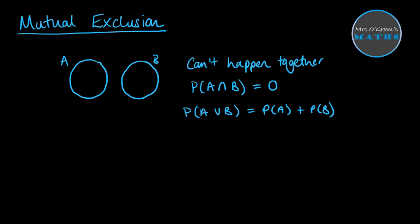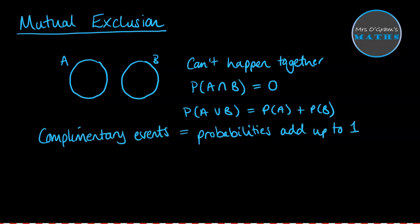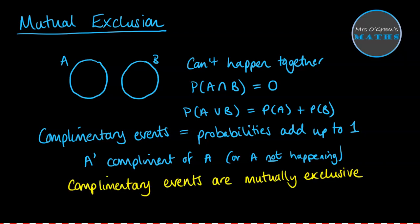We can use this to test whether something is mutually exclusive or not. A term that goes hand in hand with mutual exclusion is whether events are complementary. This happens when two events' probabilities add up to one. We think about it as A′ being the complement of A, or A not happening. Complementary events are mutually exclusive - you can't be both in A and not in A, although Schrödinger and his cat might disagree, but that's a topic for another day.